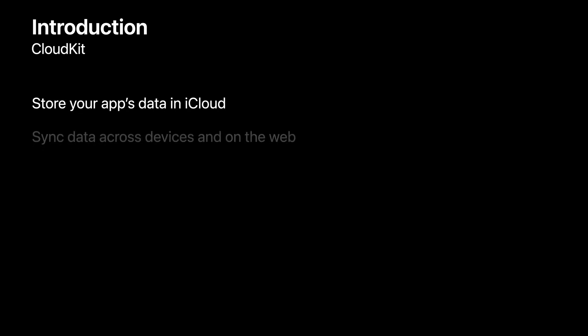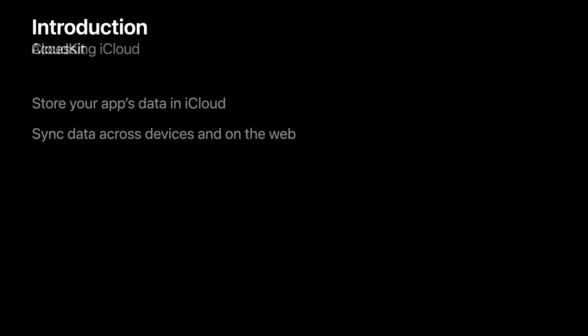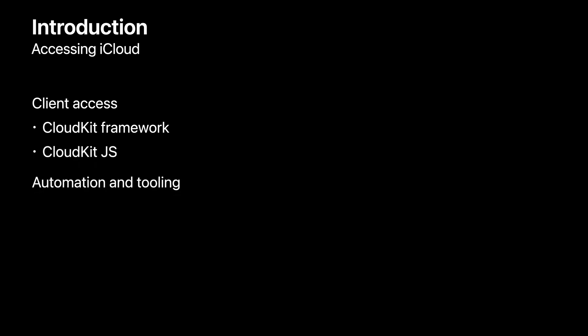CloudKit is a persistence technology that lets you store your app's data in iCloud within containers. By using CloudKit in your app, you can also have your data stay up-to-date across devices and on the web. For building your apps, you can access iCloud storage using the CloudKit framework on Apple platforms, or CloudKit.js on the web. To implement automation and tooling, Xcode provides cktool for use on macOS. And now you have a new way to automate changes and interact with iCloud using cktool.js.